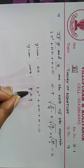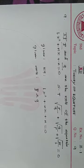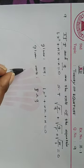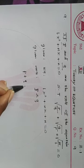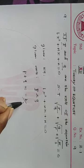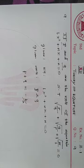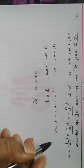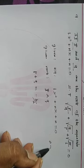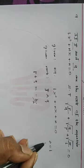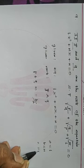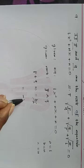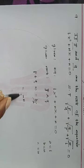So P and Q — we have the sum of the roots. Sum of roots means P plus Q. This formula, according to the equation, is minus B by A. The values are: A is L, B is N, C is N. So minus B by A gives us minus N by L.